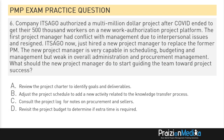Let's take a look at one more for today. Company It's A Go authorized a multi-million dollar project after COVID ended to get their 500,000 workers on a new work authorization project platform. The first project manager had conflict with management due to interpersonal issues and resigned. It's A Go just hired a new project manager to replace the former PM. The new project manager is very capable in scheduling, budgeting, and management, but weak in overall administration and procurement management. What should the new project manager do to start guiding the team towards project success?